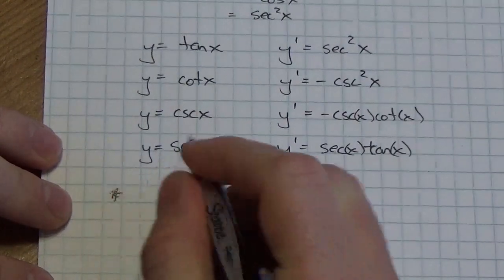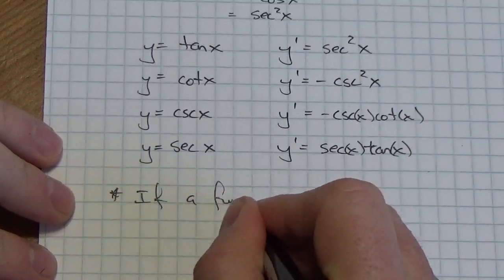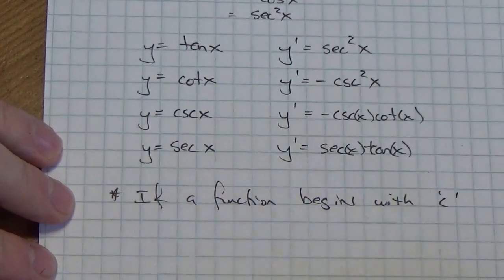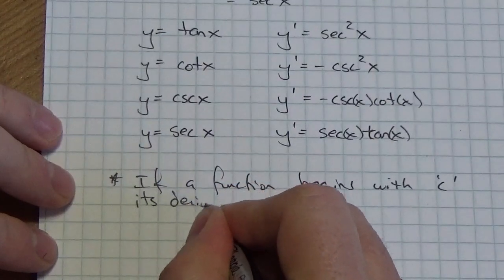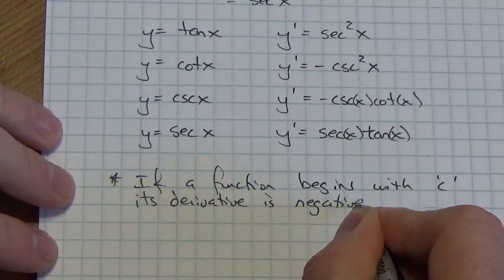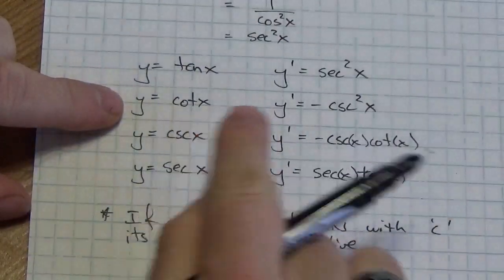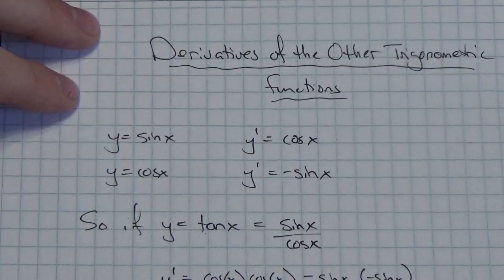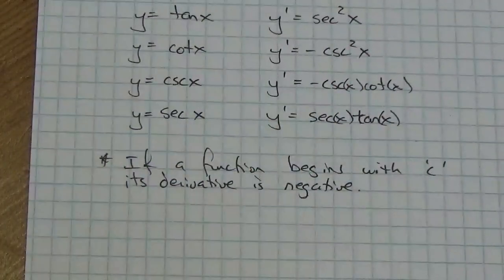One little note I want to make — and this is just a serendipity — if a function begins with the letter C, its derivative is negative. That wasn't by design, just by coincidence. Cosecant has a negative derivative, cotangent has a negative derivative, and cosine also has a negative derivative. So if you keep that in mind, that will help.